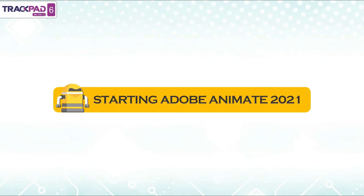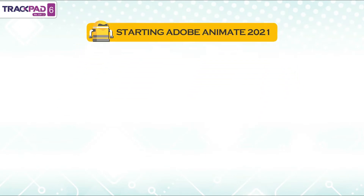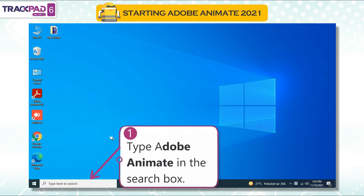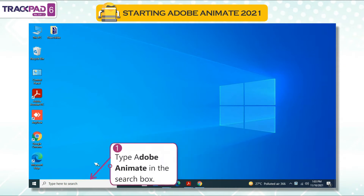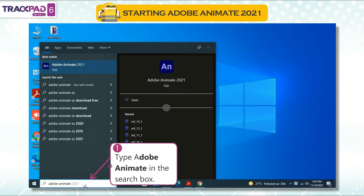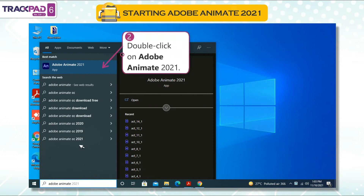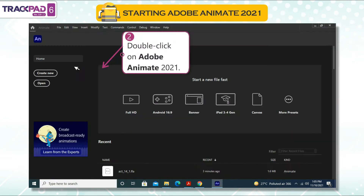Starting Adobe Animate 2021. Follow the given steps to open Adobe Animate. First, type Adobe Animate in the search box. Second, double click on Adobe Animate 2021.